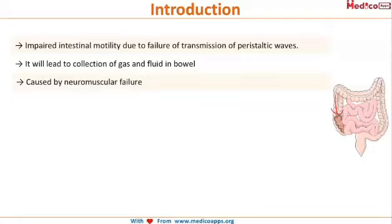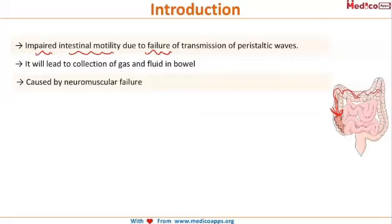Paralytic ileus can also be defined as impaired intestinal motility, which occurs due to the failure of transmission of the peristaltic waves. If there is failure of these peristaltic waves, there won't be any motility, and due to this impaired motility, there will be collection of gas and fluid in the bowel — in short, bowel obstruction.